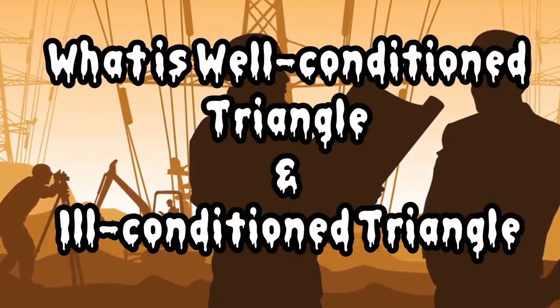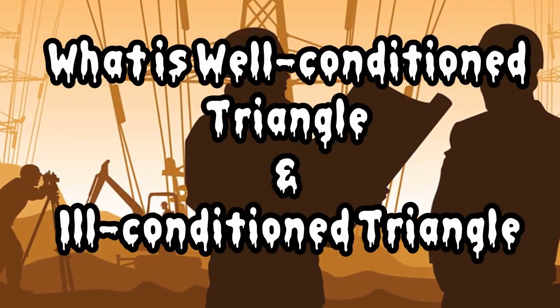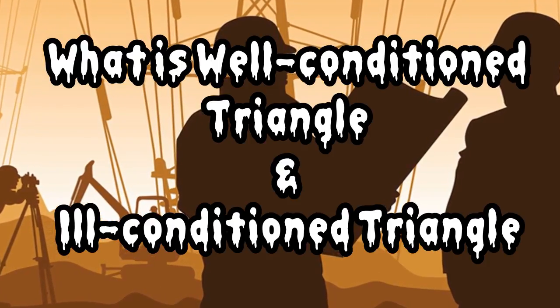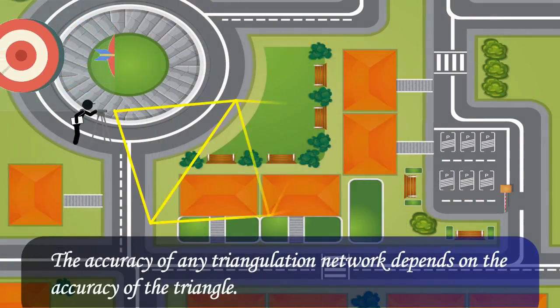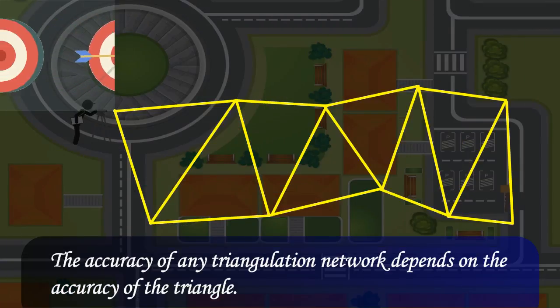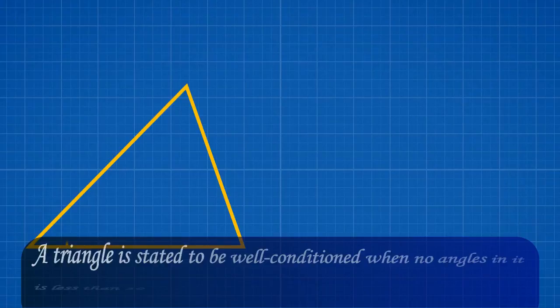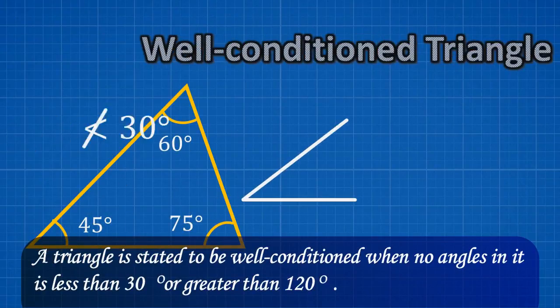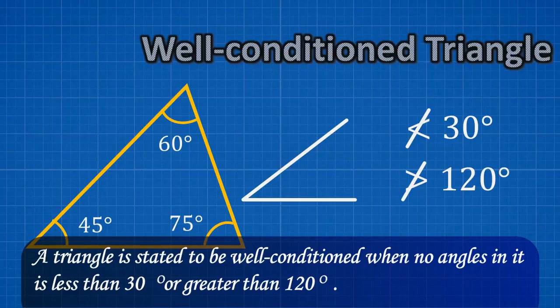What is well-conditioned triangle and ill-conditioned triangle? The accuracy of any triangulation network depends on the accuracy of the triangle. A triangle is stated to be well-conditioned when no angles in it is less than 30 degrees or greater than 120 degrees.